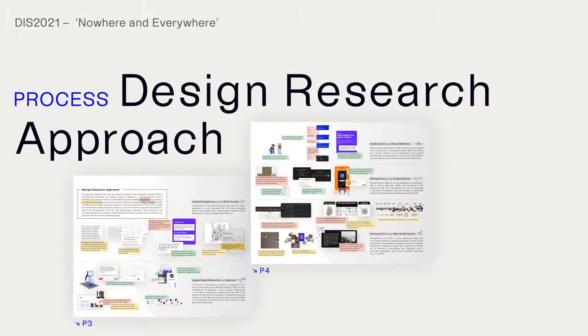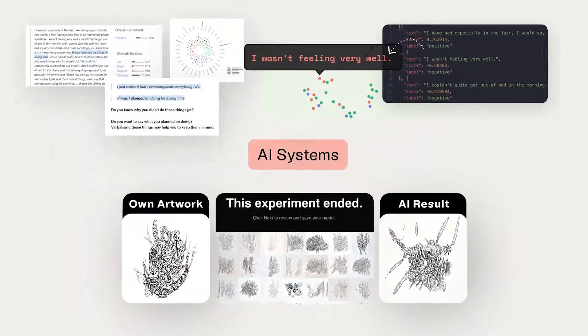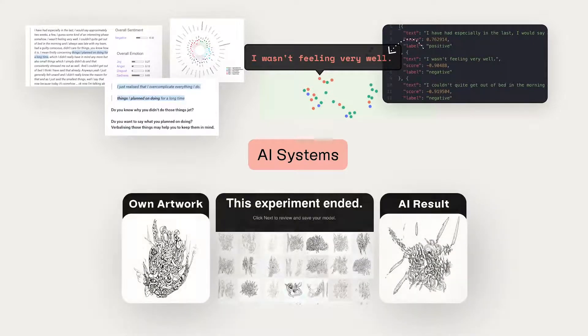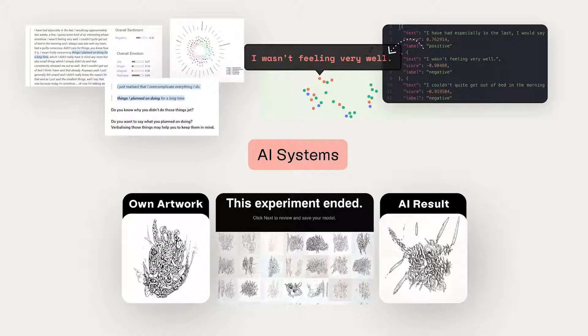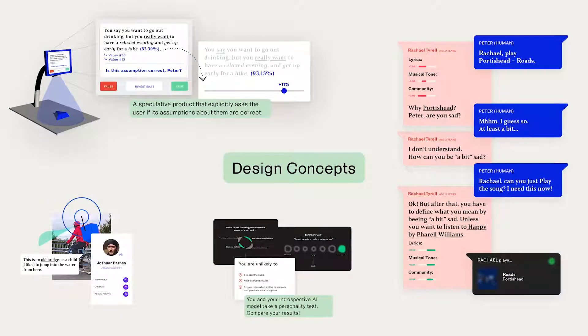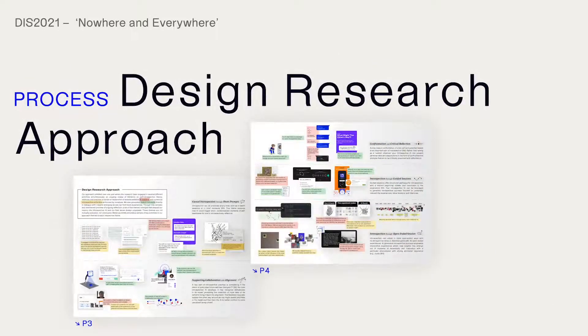We conducted hands-on explorations of AI systems, such as running journal entries through personality insight extraction and plotting the results on an interactive canvas, or teaching a model on a personal archive of artworks and reflected on the machine outputs. We produced early design concepts that critically and speculatively engaged in what introspective AI services could look like, that provided a foundation for future work. Through this complex and intertwined process of ongoing reflection and exploration, a set of five themes emerged that shaped our inquiry into introspective AI.